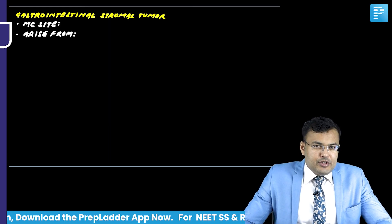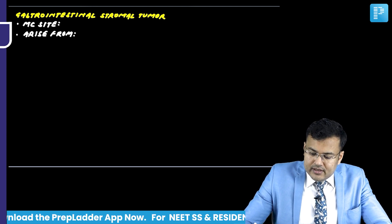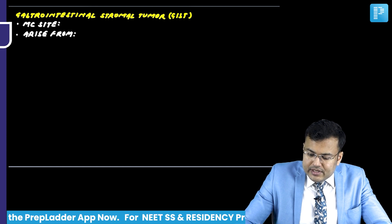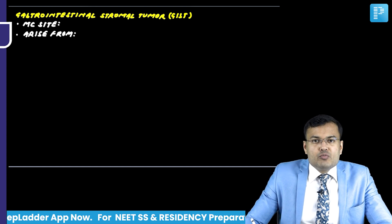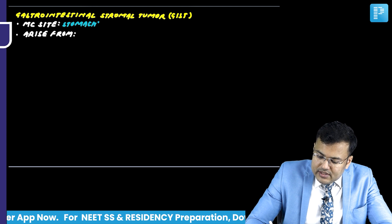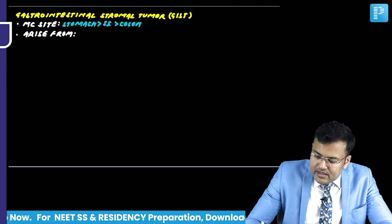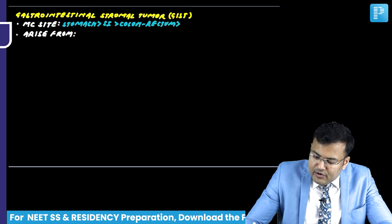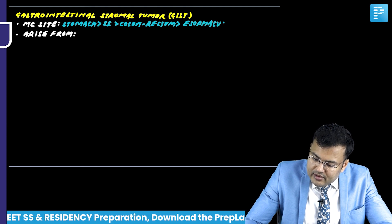We are going to discuss a very important tumor — gastrointestinal stromal tumor (GIST). The most common site of GIST is the stomach, followed by the small intestine, followed by colon/rectum, and then esophagus.